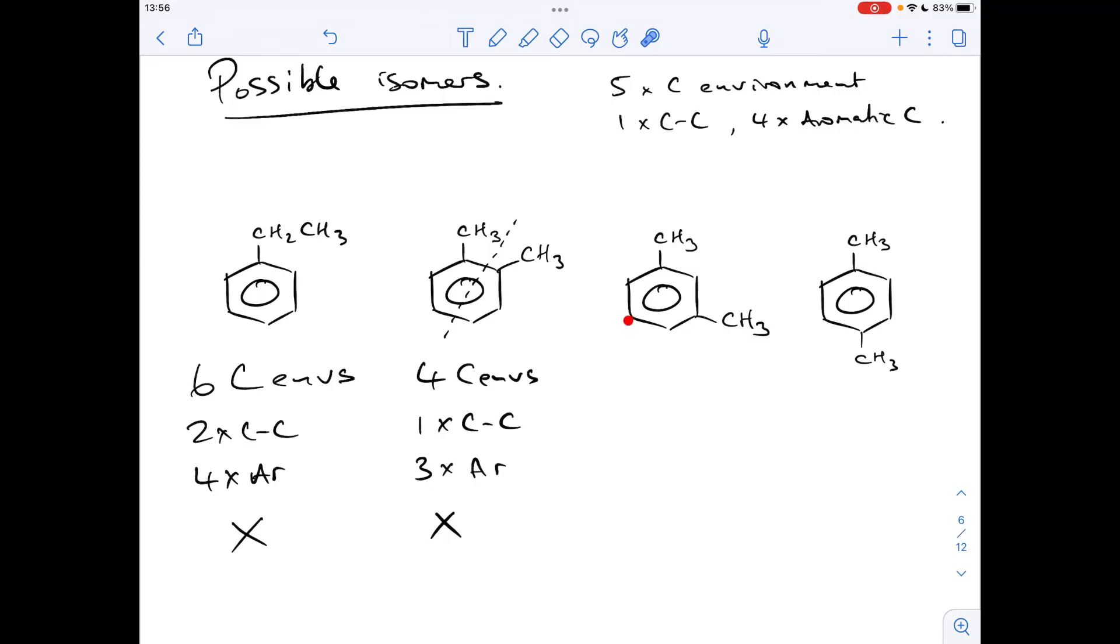Moving on to the next one, we've got a line of symmetry here. So they're equivalent to each other. Then that's unique. They're equivalent to each other. They're equivalent to each other. That's unique. So we've got one, two, three, four, five carbon environments. One C to C. One, two, three, four aromatic. So this one's looking like it's the answer.